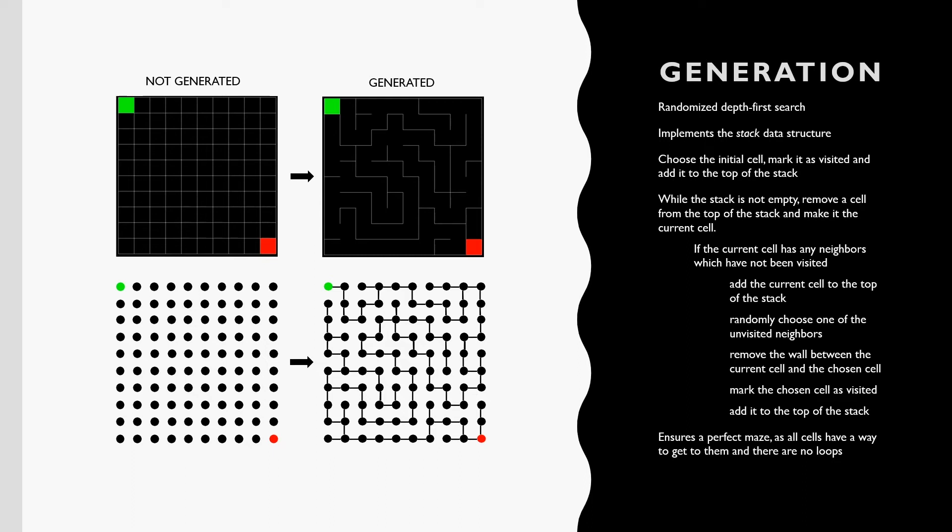We continue this process until all cells have been visited. This method ensures that we have a perfect maze as all cells are accessible and there are no loops. On the left, you can see a visualization of the maze represented as a graph before and after generation.